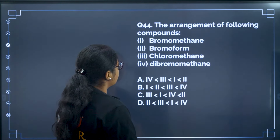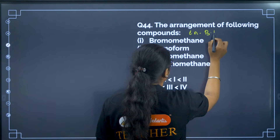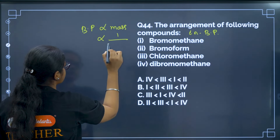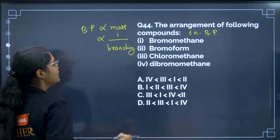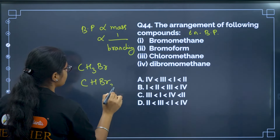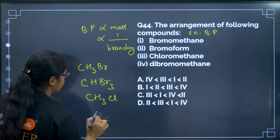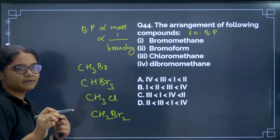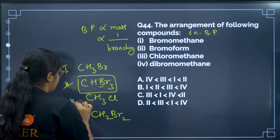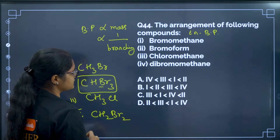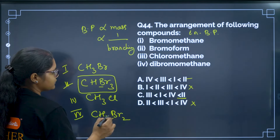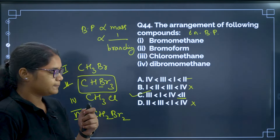Question 44: Arrange the following compounds in increasing order of boiling point. Boiling point is directly proportional to molar mass and inversely proportional to branching. Bromoethane (CH3CH2Br), chloroethane (CH3CH2Cl), and dibromoethane (CH2Br2) are given. Greater the number of bromine atoms, higher the molar mass and hence higher the boiling point. After eliminating options B and D, the compound with two bromines is next highest. The correct answer is option C.